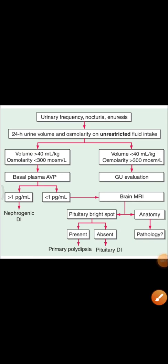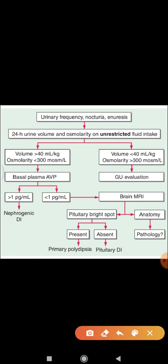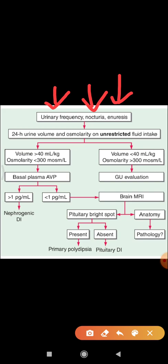This flowchart describes the simplified approach to the differential diagnosis of diabetes insipidus. If a patient presents with symptoms like urinary frequency, frequent urination at night (nocturia), inability to control urination (enuresis), and excessive thirst, then the diseases that come to mind are nephrogenic diabetes insipidus, primary polydipsia, pituitary diabetes insipidus, or genitourinary abnormality.